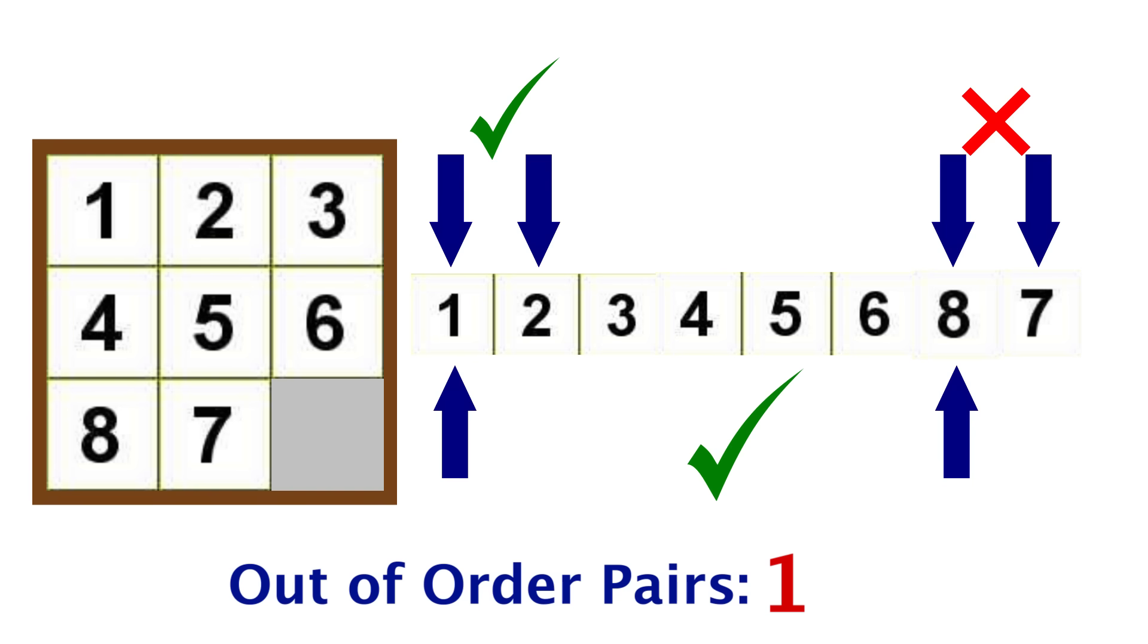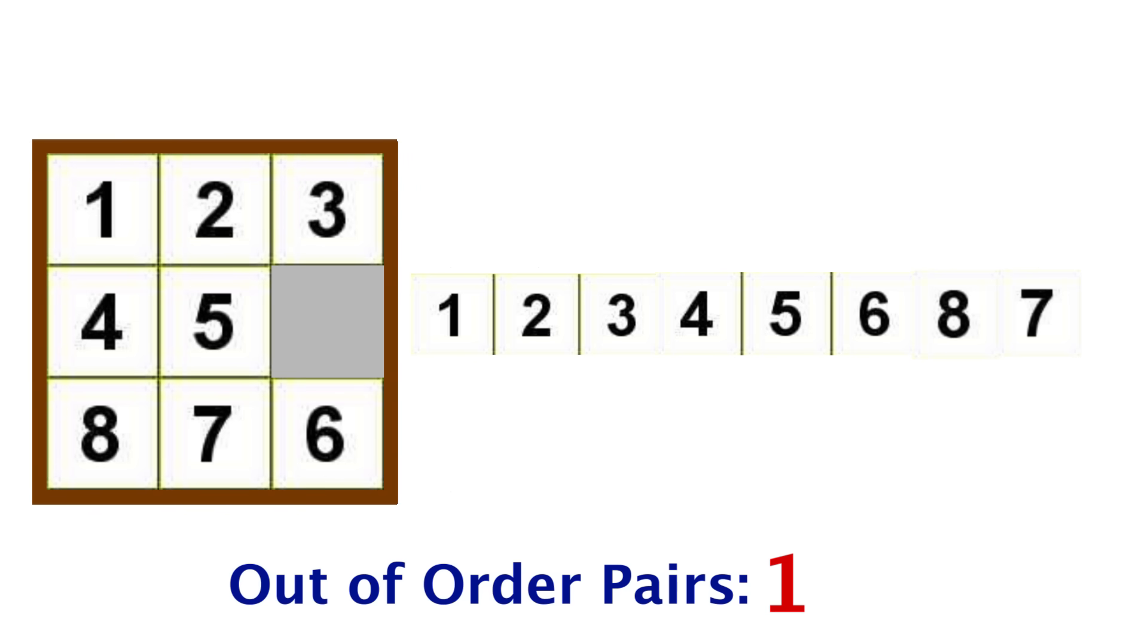The goal is to have 0. So now let's do another vertical move and move the 6 down. On our linear number line, we know the 6 moves two places to the right. But before I move it, look closely. Originally the 6 and the 8 are in order, because 6 is supposed to come before 8.